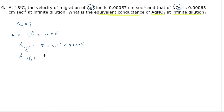By multiplying its ionic mobility, 6.3 into 10 raise to the power minus 4, into Faraday, 96500. So ionic mobility multiplied into Faraday will give us the equivalent conductance.